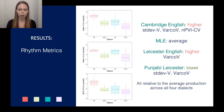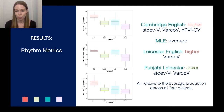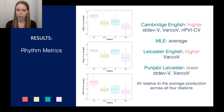I've created two groups of RMs based on the patterns of results. In the first group — standard deviation of vocalic interval durations, VarCoV, and nPVI-CV — Cambridge speakers were significantly higher than average, perhaps suggesting a more stress-timed interpretation with a lot of variability in vowel durations and between adjacent syllable-like units. MLE speakers were pretty average on these measures. Leicester speakers were higher on VarCoV, while Punjabi Leicester speakers had significantly lower standard deviations for vowel duration and VarCoV, suggesting a more syllable-timed interpretation.